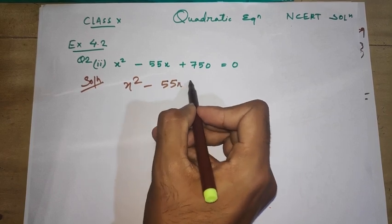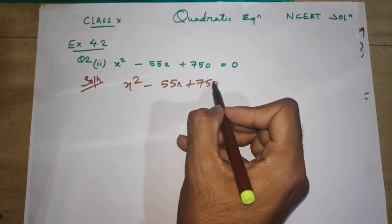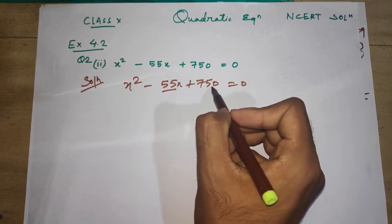Now you see here we have the question: x² - 55x + 750 = 0. We have 55 and 750.